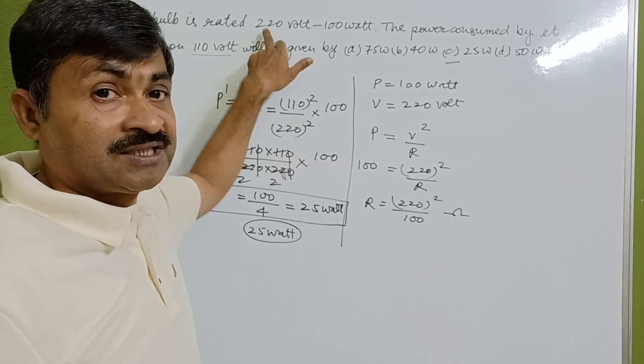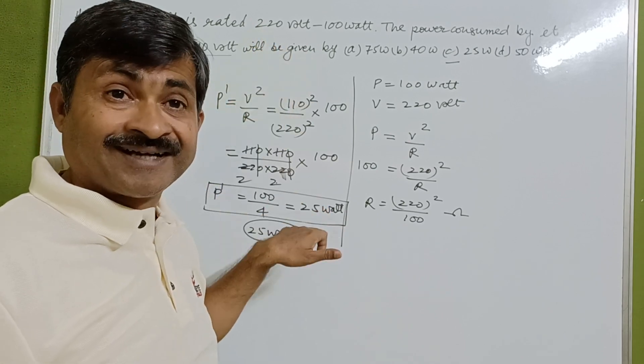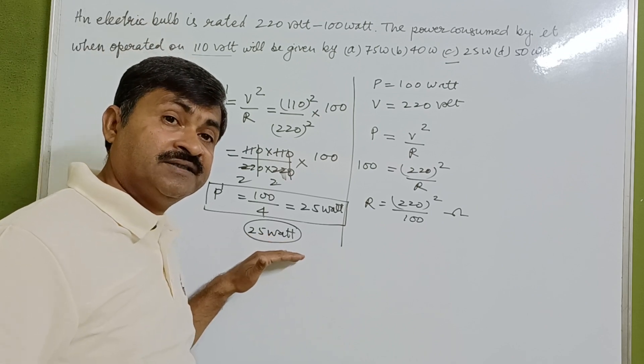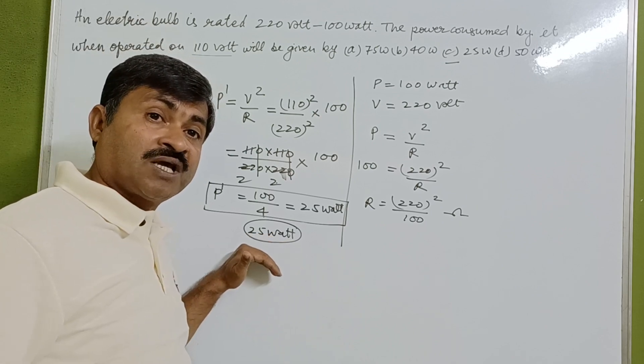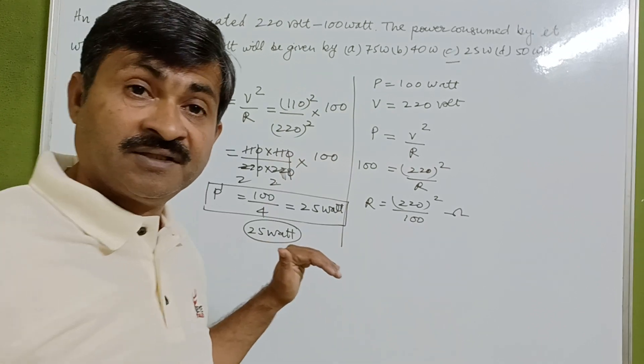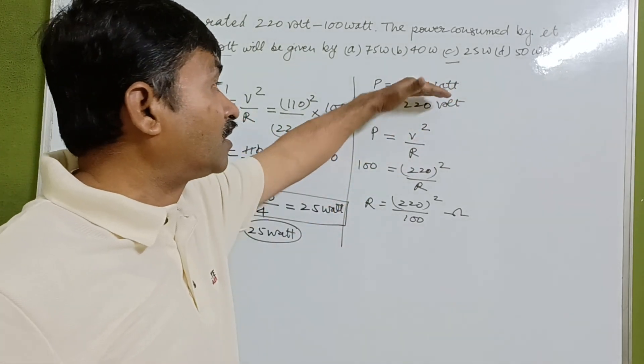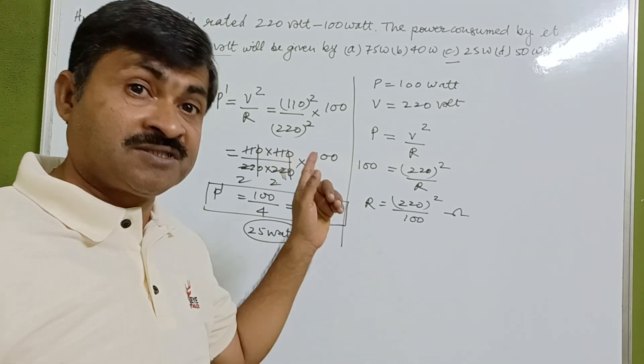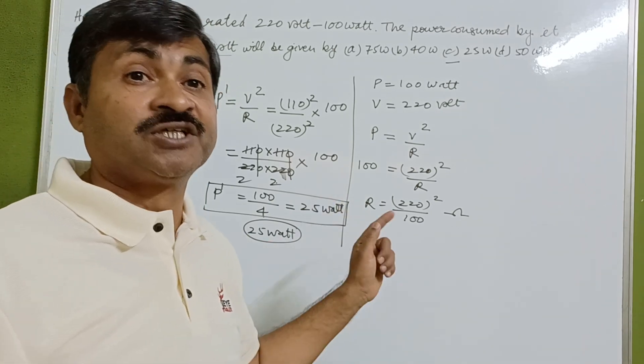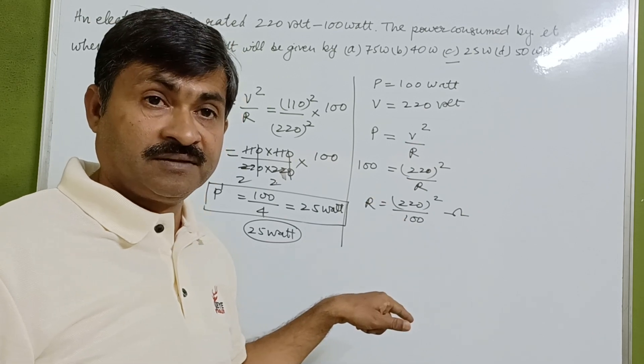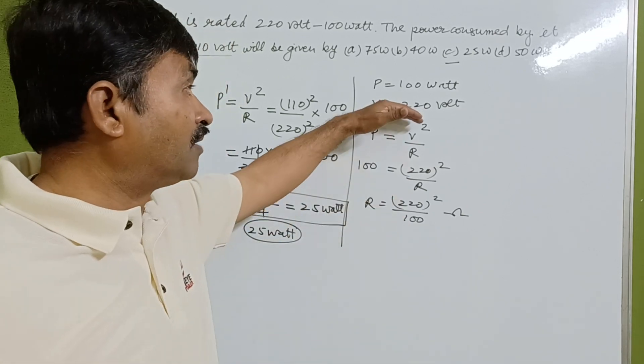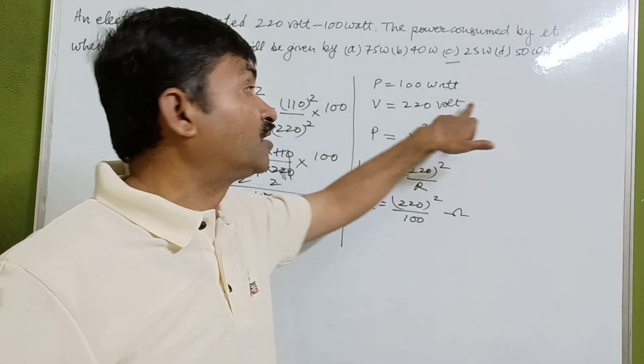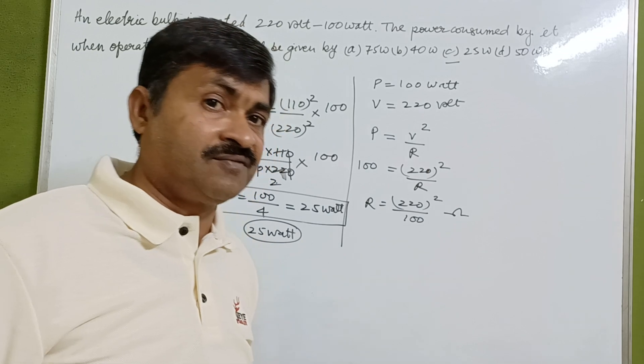1 by 2 means 110 volt. When we calculate power consumption, we get 25 watt. 100 watt to 25 watt means one fourth. If the voltage is reduced by 2 times, the electric supply becomes 1 by 2 times and power consumption becomes 1 fourth.